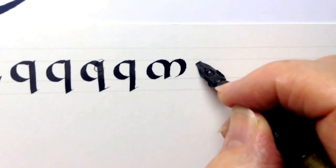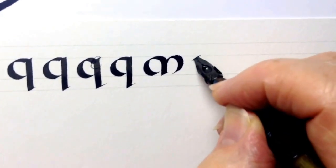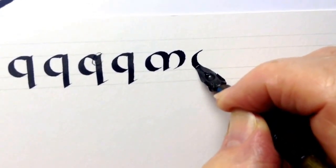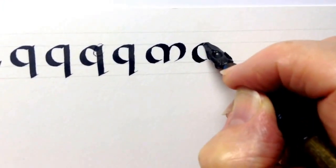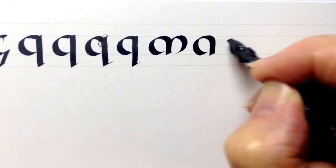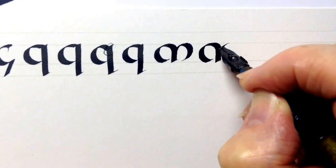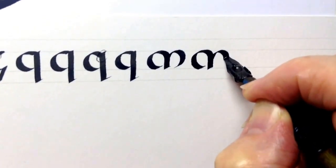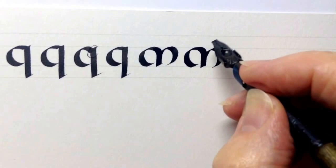Let me do that again. Nib again held as with all the letter forms 27 to 30 degrees. Pull it down to the left to give you that slight thickening, and then finish the bowl.